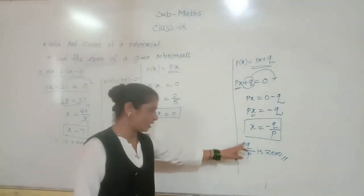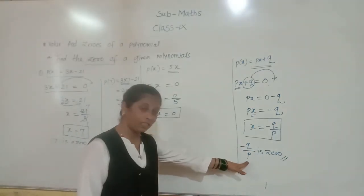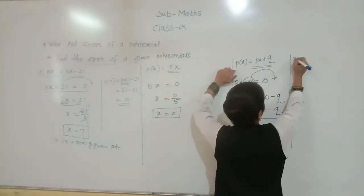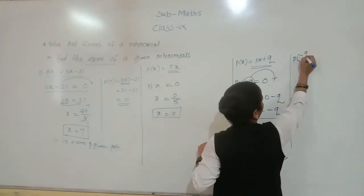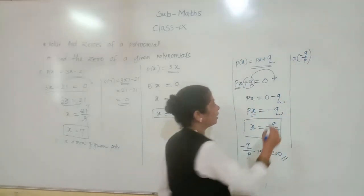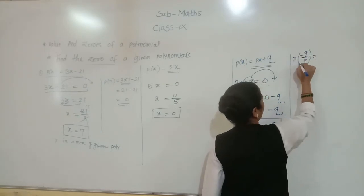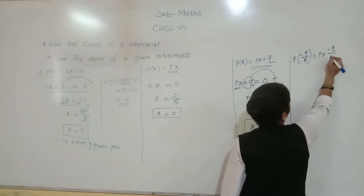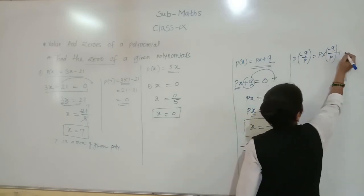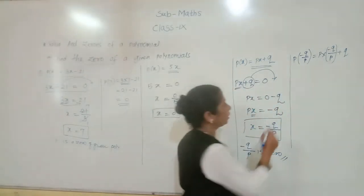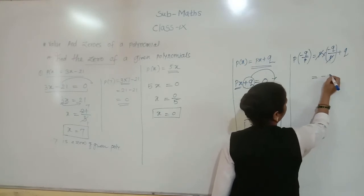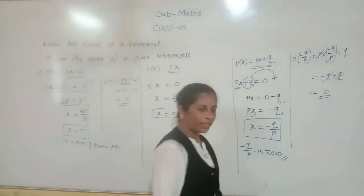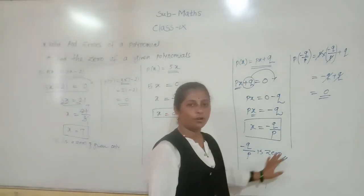We will verify whether minus q by p is the zero of the polynomial. We put the value of X as minus q by p. So P of minus q by p equals to p multiplied by minus q by p, plus q. Here p gets cancelled, giving minus q plus q, which equals 0. So we can confirm that minus q by p is a zero of the polynomial.